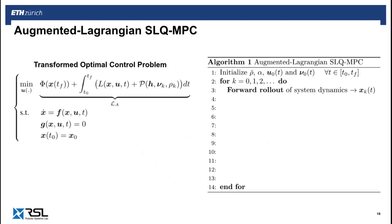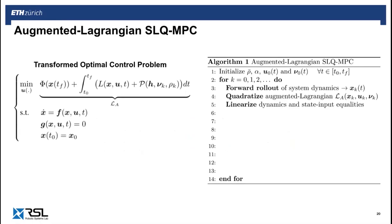Now, the way the constrained SLQ algorithm works is as follows. In the inner loop, we start by performing a forward rollout of the dynamics around the nominal input trajectory. Note that by keeping the derivations in the continuous time domain, we can make use of adaptive step-size integrators to perform the rollout. Then, a second-order approximation of the augmented Lagrangian is computed along with a linearization of the dynamics and equality constraints.